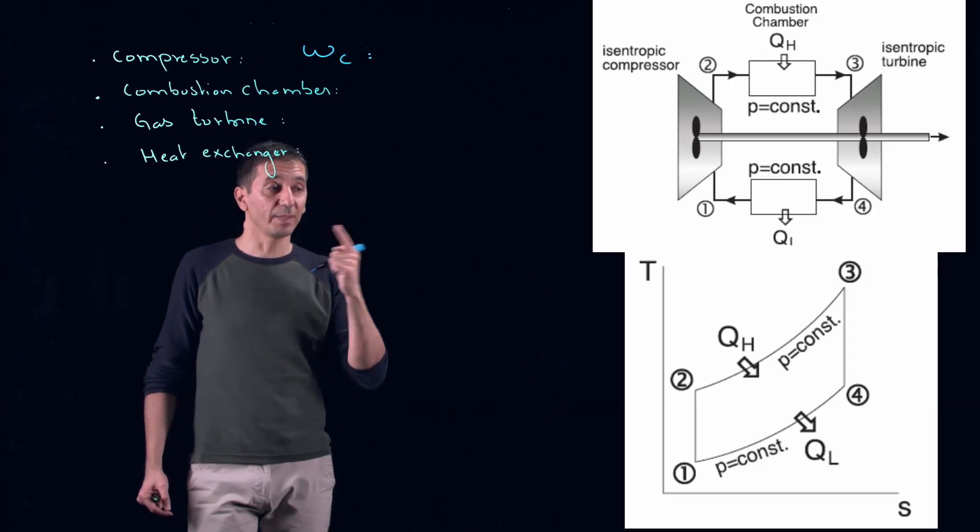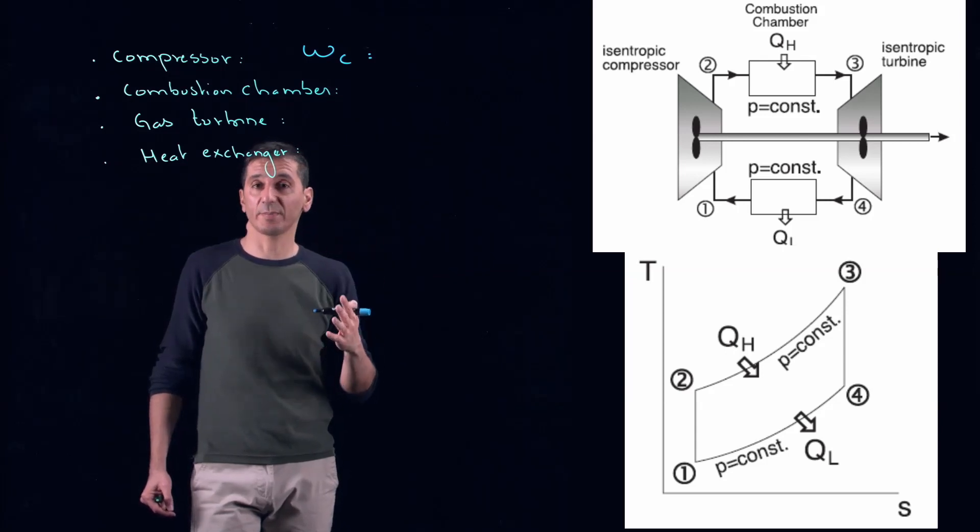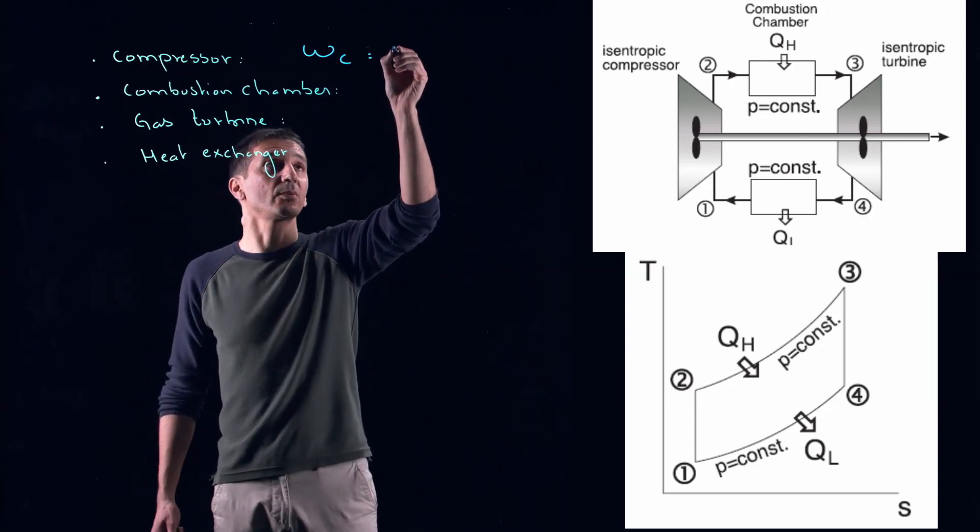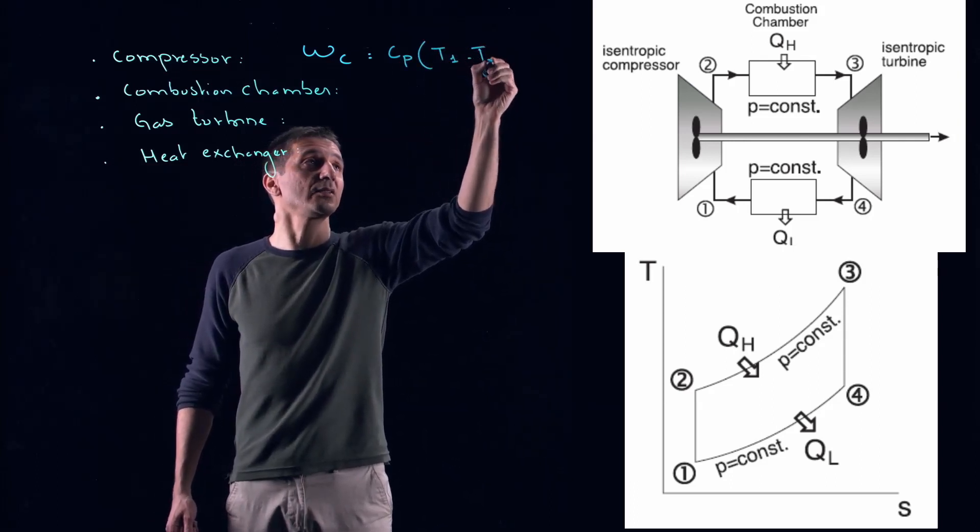And because it's an ideal gas, so the variation in enthalpy is only a function of temperature. So, we can write Cp T1 minus T2.